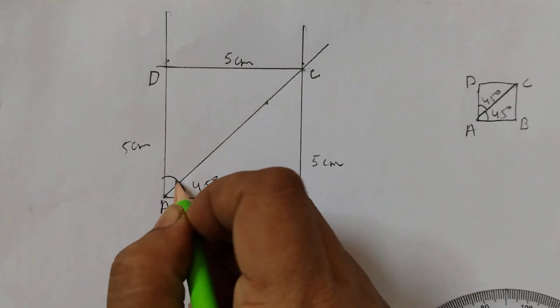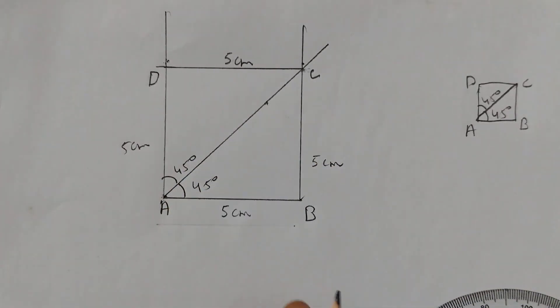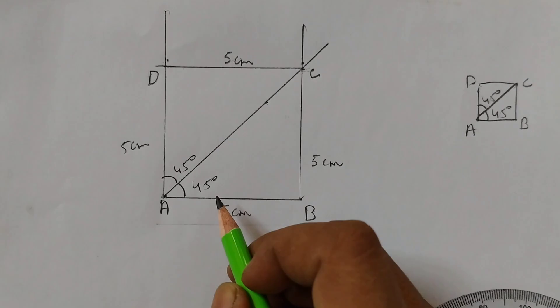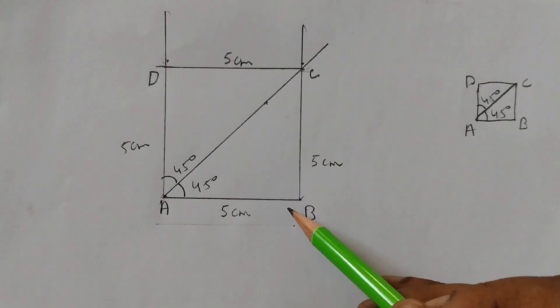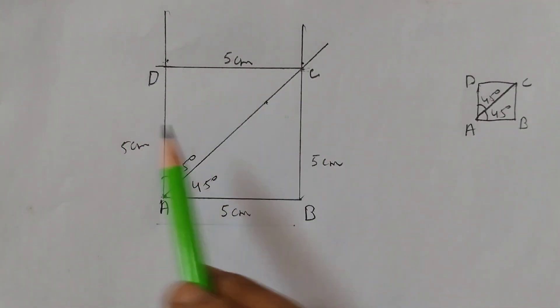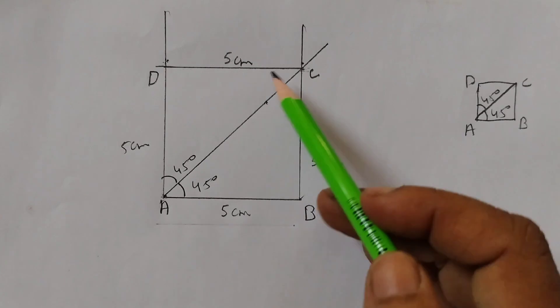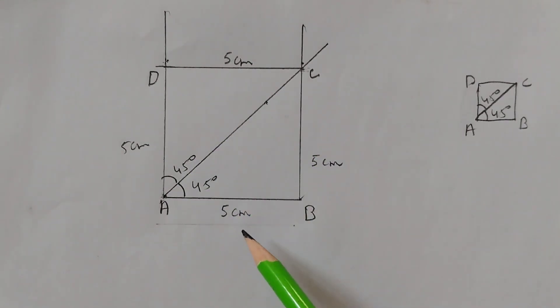What are we getting? We are getting a square. When the diagonal divides the opposite angles into 45 degrees and 45 degrees we get a square. A square is also a rectangle. You can take this of any length.